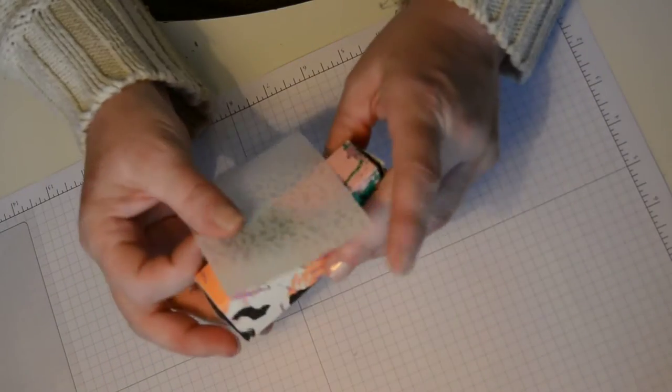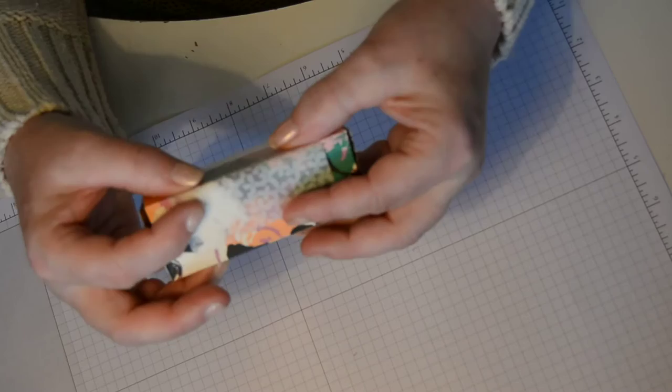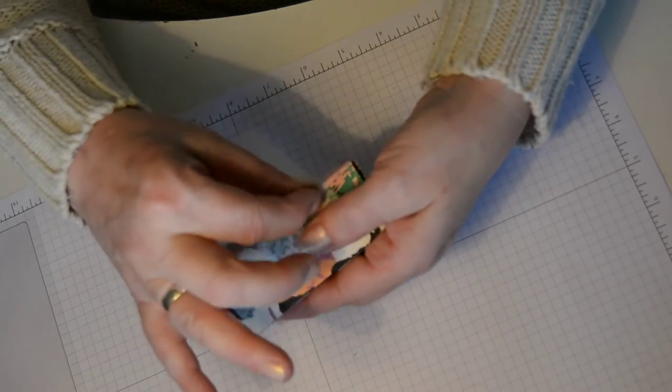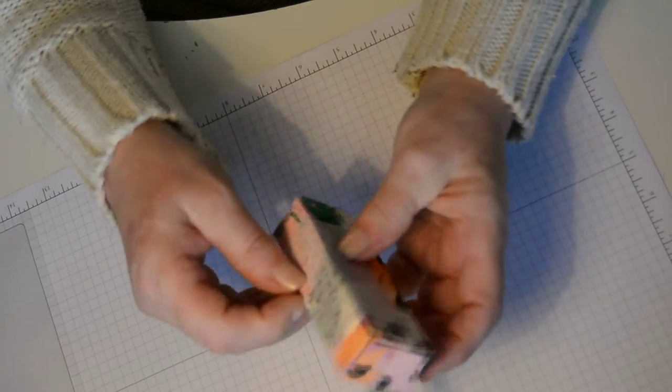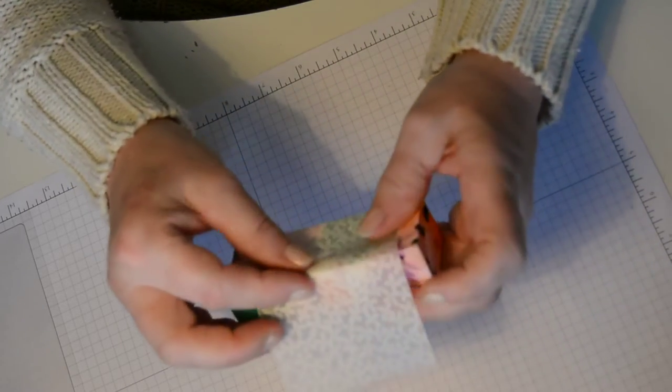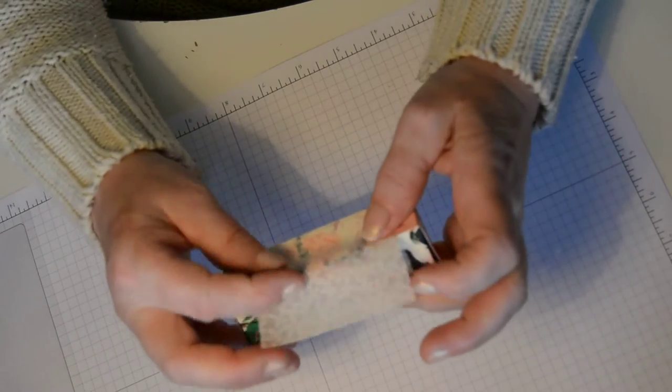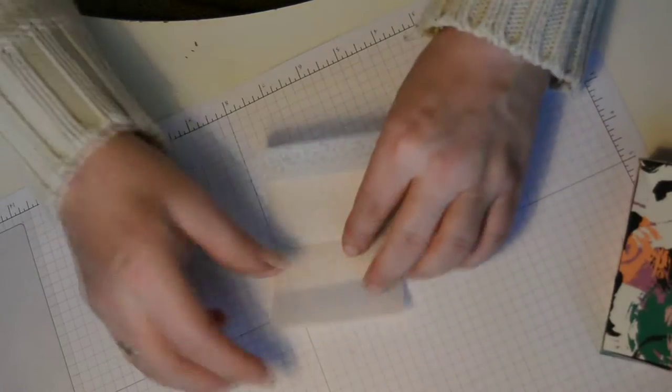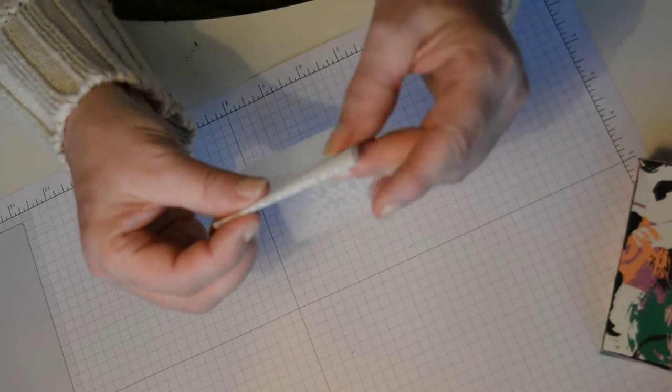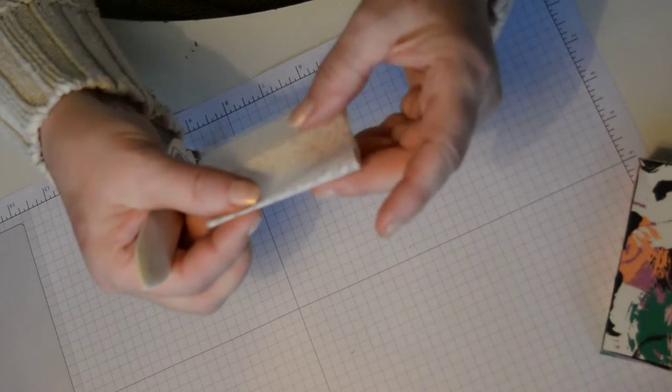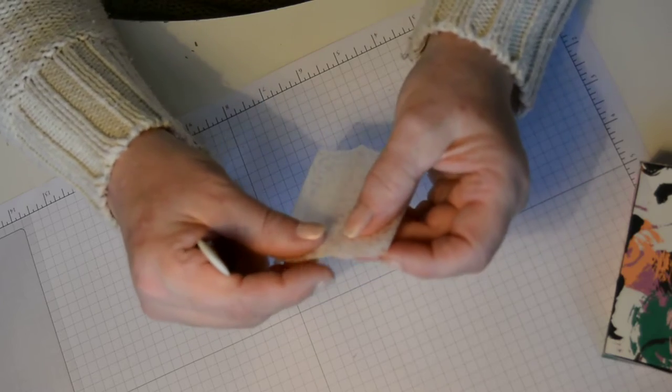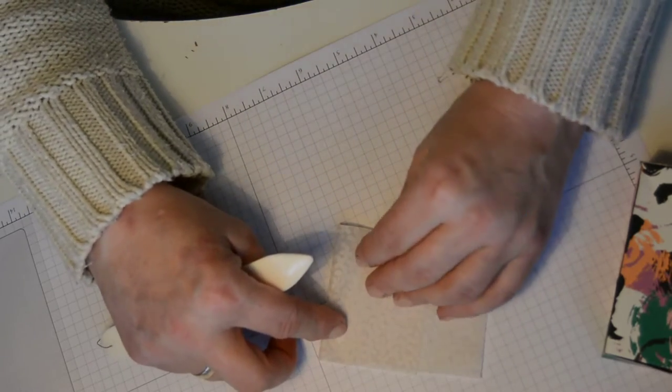You will then take your box and just hold it about half way across the base and gently go round creasing the box all the way over. And again, and again. And then you can run your bone folder over the pieces that you've made, making sure your sides are aligned. That way you'll know that it should sit flush.